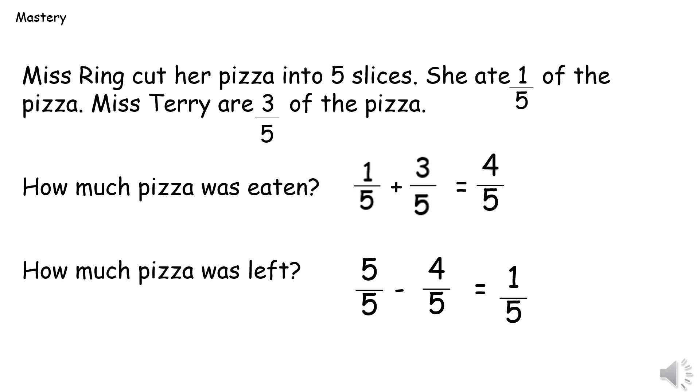To work out how much pizza was left, we need to start with the whole. So we had one whole pizza, but we need to convert that into a fraction. As we're working in fifths, I'm going to make the fraction have a denominator of five. Now, in order for that to be a full pizza, one whole pizza, I need to have five as the numerator too. So my number sentence will be five fifths, take away the four fifths that were eaten already, which would leave one fifth left.